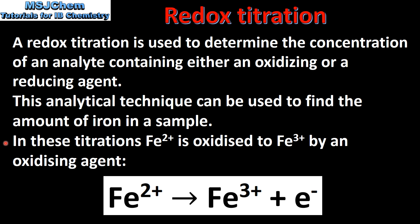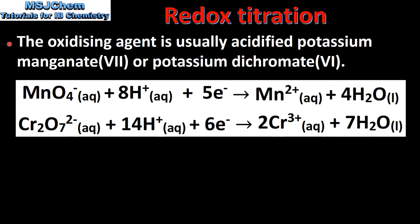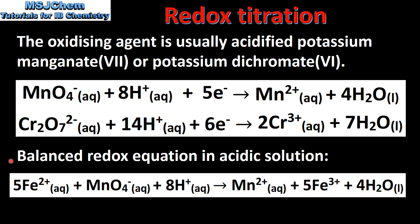In these titrations the Fe2+ ion is oxidized to Fe3+ by an oxidizing agent. Here we have the half equation for the Fe2+ ion being oxidized to the Fe3+ ion. The oxidizing agent is usually acidified potassium manganate or potassium dichromate. Here we have the half equations for the reduction of the permanganate ion and the dichromate ion balanced in acidic solution, and the balanced redox equation in acidic solution between the Fe2+ ion and the permanganate ion.